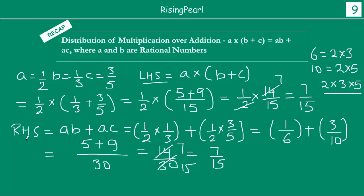On the right hand side we are getting 7/15, which is exactly the same as the left hand side. So we notice that left hand side is indeed equal to right hand side. That means distribution of multiplication over addition is actually valid for all rational numbers.